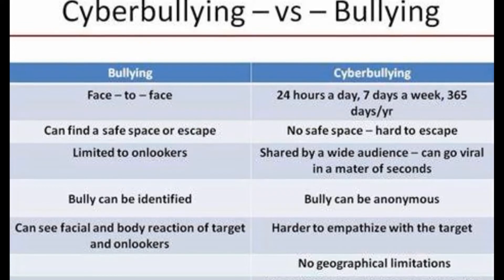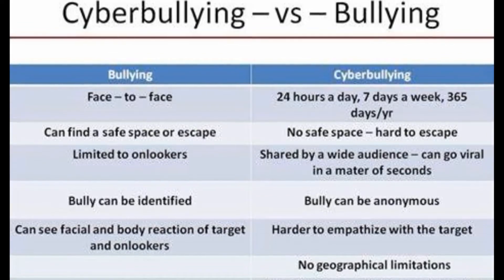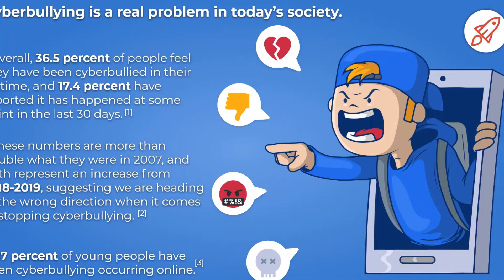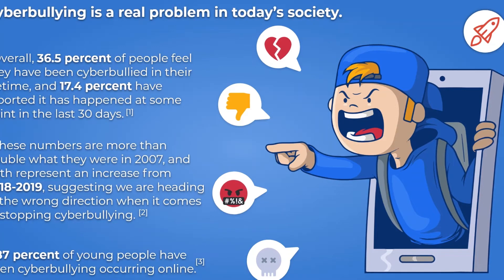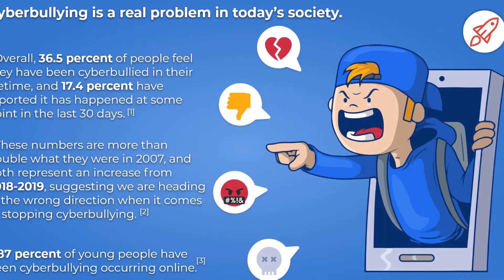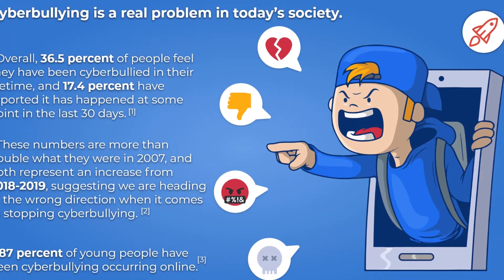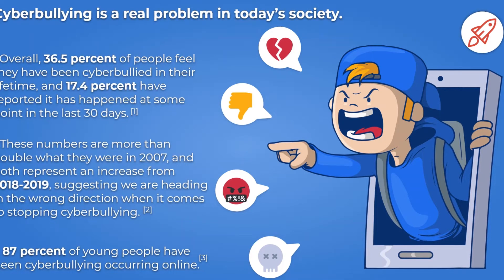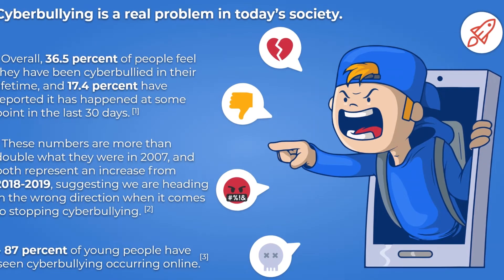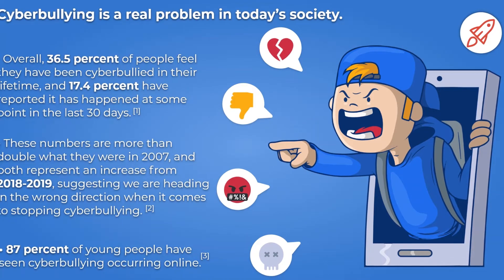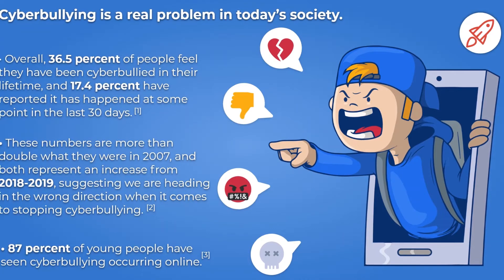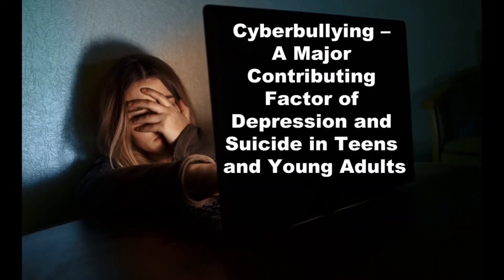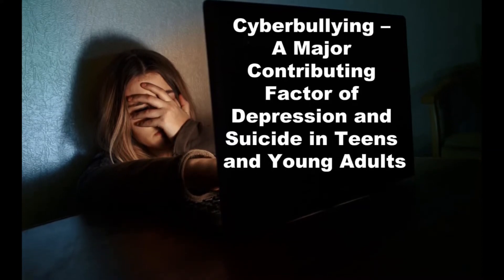Cyberbullying can harm the online reputations of everyone involved — not just the person being bullied, but those doing the bullying or participating in it. Cyberbullying has unique concerns: it can be persistent, making it difficult for children experiencing cyberbullying to find relief. Another concern is that it could be permanent — most information communicated electronically is permanent and public if not reported and removed. A negative online reputation can impact college admissions, employment, and other areas of life. It is also hard to notice because teachers and parents may not overhear or see cyberbullying taking place.